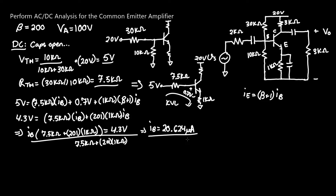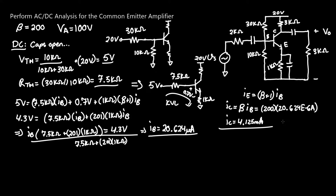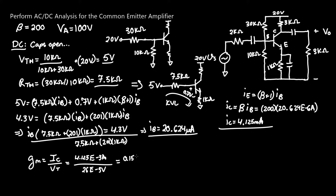For the small signal model, we need I_C, which simply equals β × I_B = 200 × 20.624 µA, giving I_C = 4.125 mA. Transconductance G_M equals I_C / V_T = 4.125 mA / 26 mV, which equals 0.1587 siemens.